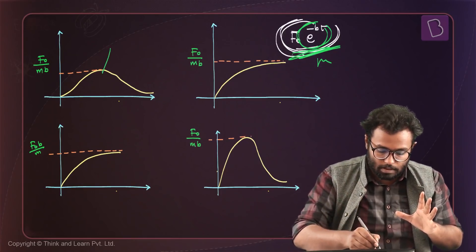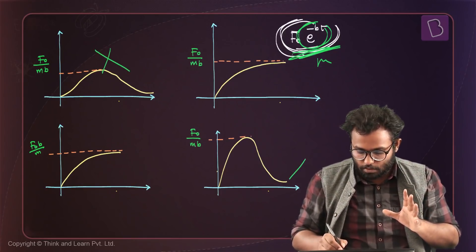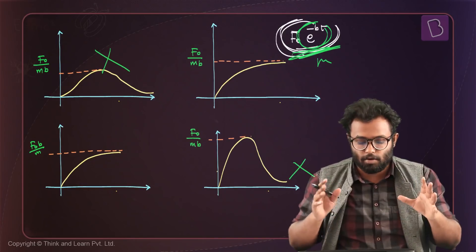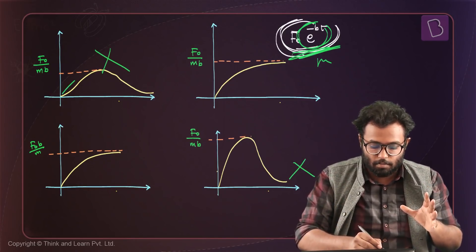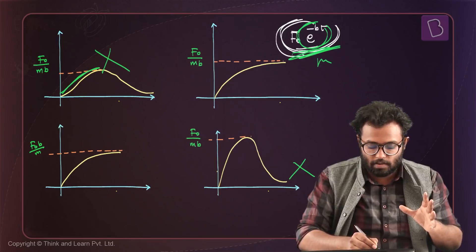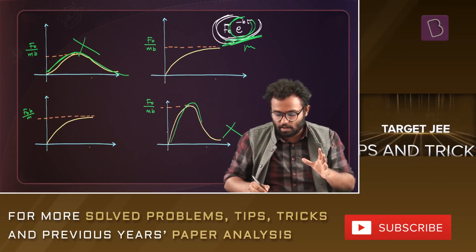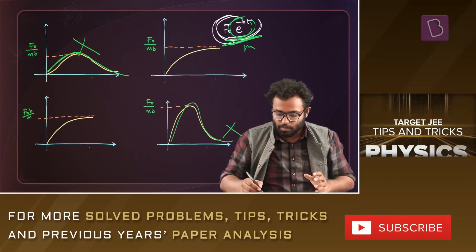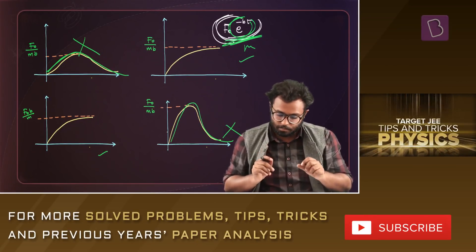So two options get eliminated immediately — the ones where velocity increases and then decreases. Velocity would only increase. So we are left with two remaining options.